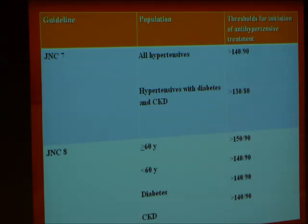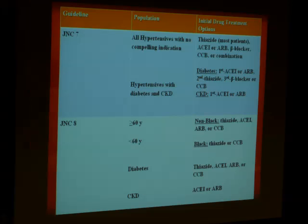For step 3, if BP is not controlled with step 2, first make sure the patient is adherent to medication. Second, increase the doses of the first two medicines to optimal doses. Third, reassess all lifestyle measures — ensure the patient is controlling salt in diet, alcohol intake, and smoking. All those things should be addressed before moving to step 3. If all those things are addressed and doses are optimal, the third addition will usually be a thiazide diuretic — hydrochlorothiazide, starting with 12.5mg and increasing to 25mg.